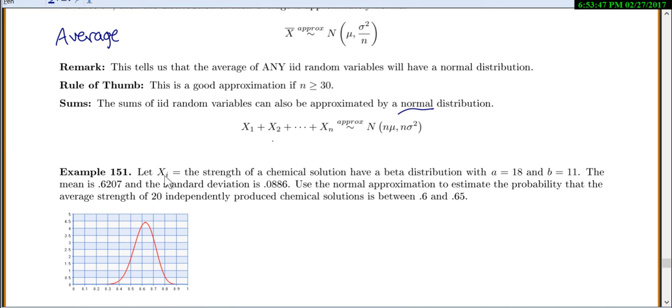In this example, let's let each of our x's be the strength of a chemical solution with a beta distribution, a equals 18 and b equals 11. That doesn't actually matter to you, those are just parameters for a beta distribution. The mean is 0.6207 and the standard deviation is 0.0886. Let's find the variance real quick by squaring our standard deviation.